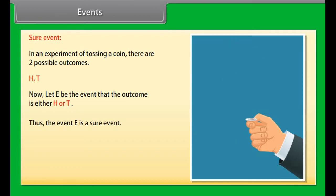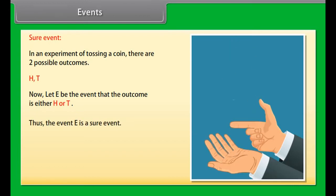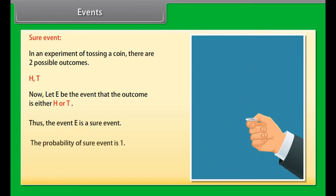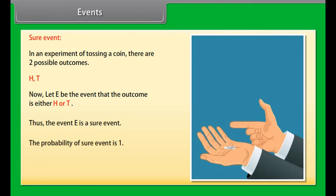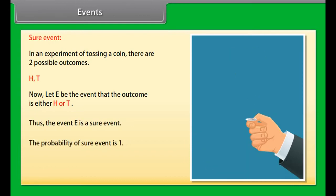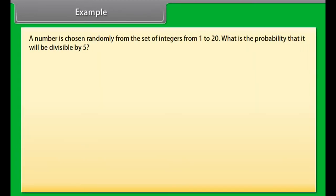Sure event: in an experiment of tossing a coin, there are 2 possible outcomes: H and T. Let E be the event that the outcome is either H or T. Thus, the event E is a sure event.